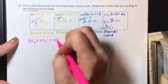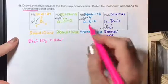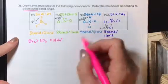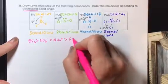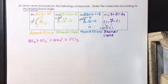Ammonia, or sorry, the ammonium ion has an angle of about 109.5, and then because of the lone pair on PCl3, that molecule will have the smallest angle.